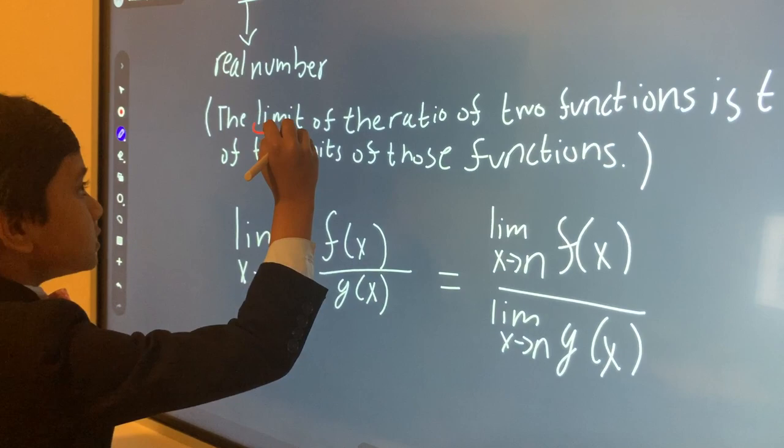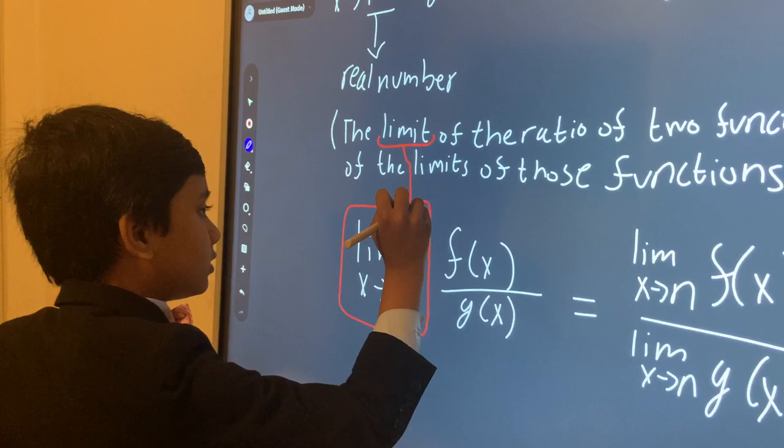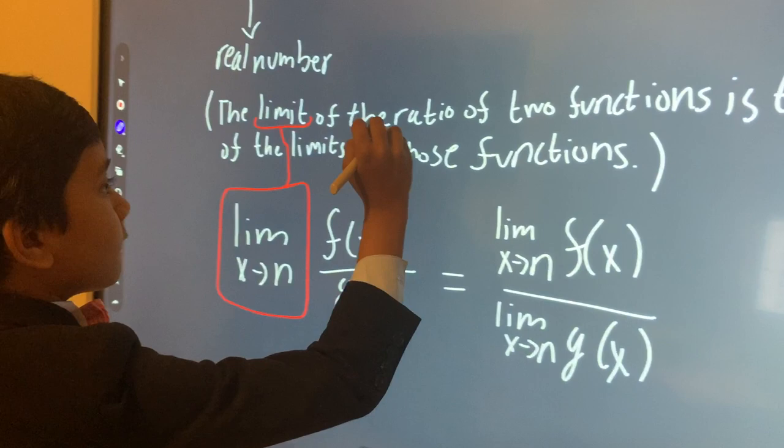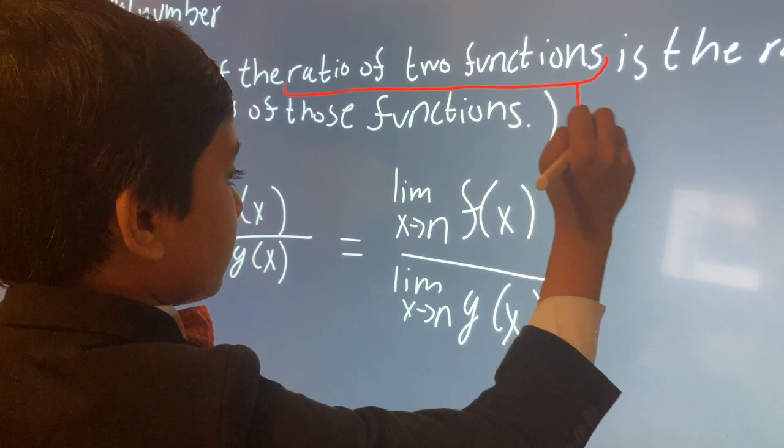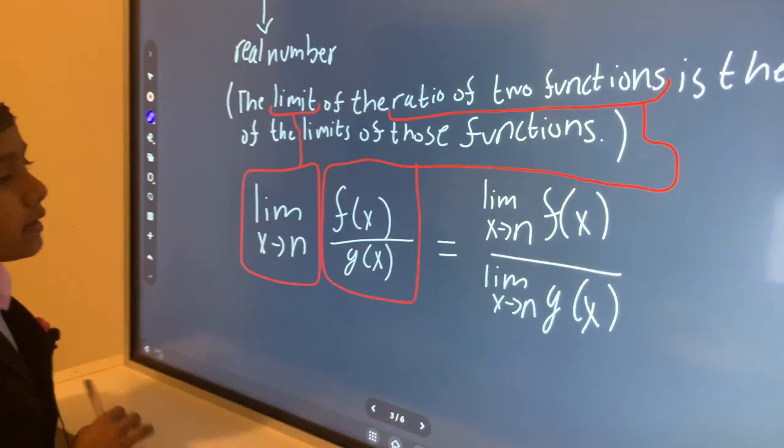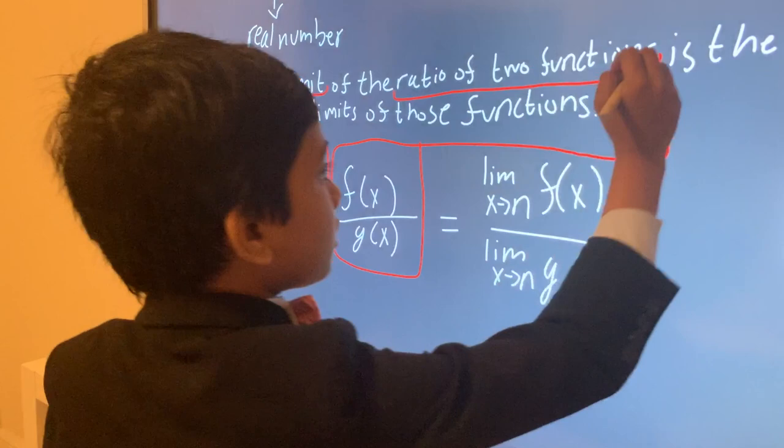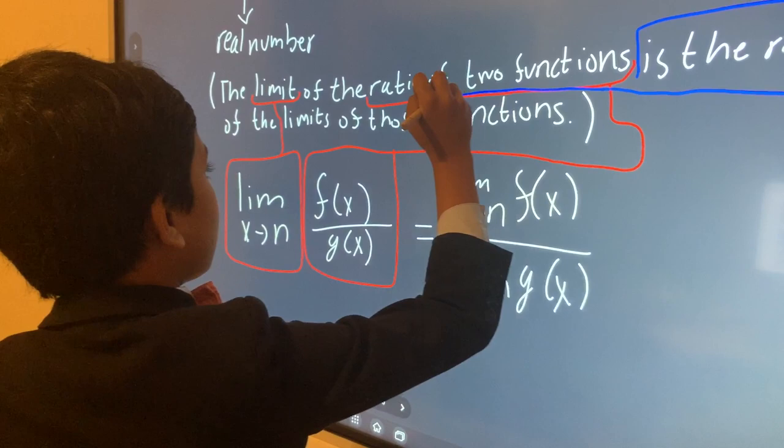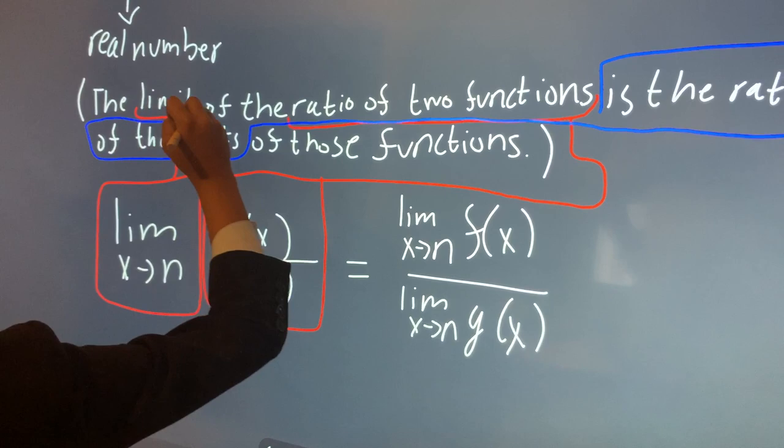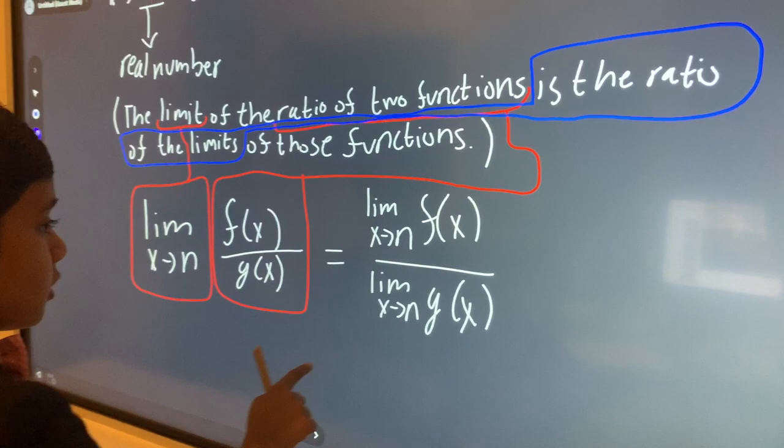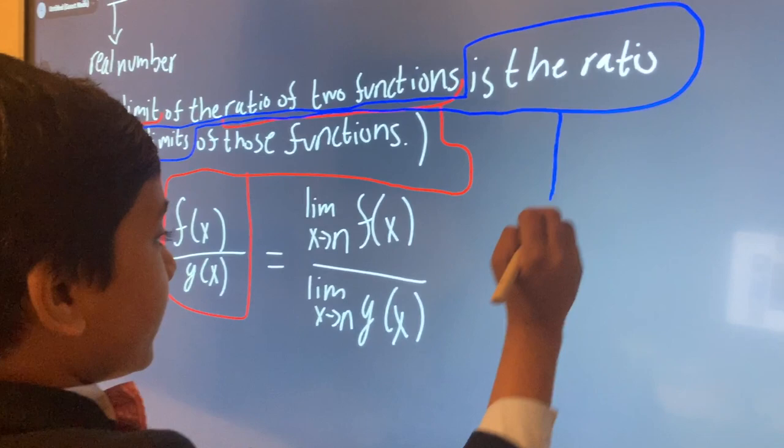So how does everything in this equation correspond with that? The limit of the ratio of two functions, and we can very obviously see what the limit is and the ratio is. So we obviously know that then we have the ratio of the limits of those functions.